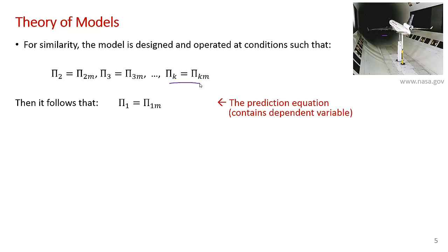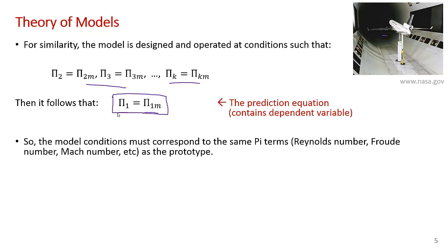If you manage to scale the model and set up the conditions so that pi 2, pi 3, up to pi k are the same for the model and the prototype, then it follows that the pi 1s are the same. This is called the prediction equation, because once you satisfy the conditions of similarity, this equation contains the relationship between the variable that you're interested in for the model and the full-scale prototype.